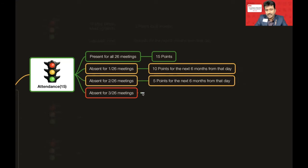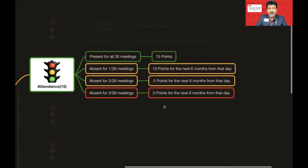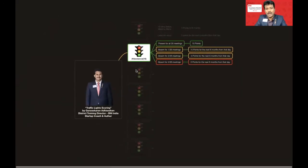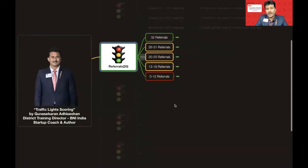If you have two absences you will get only 5 points, and with three absences you get zero points, because the minimum required attendance percentage is not met.